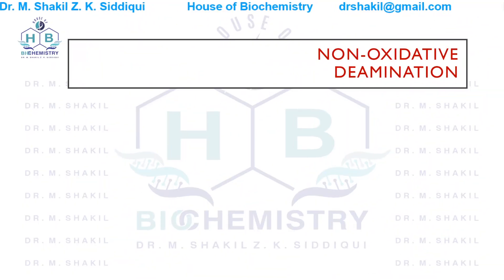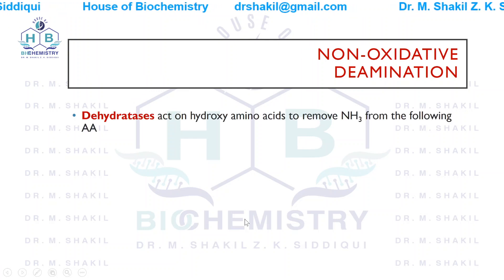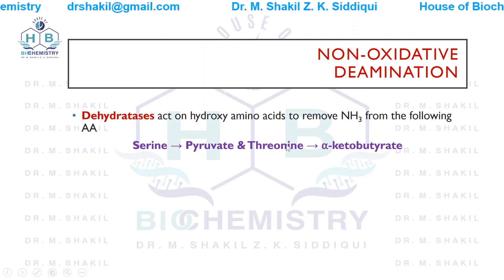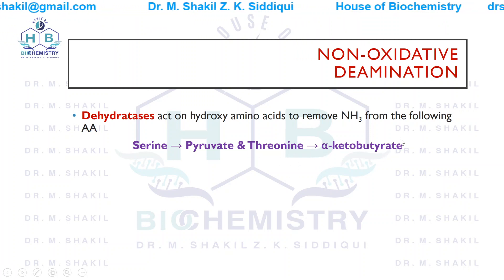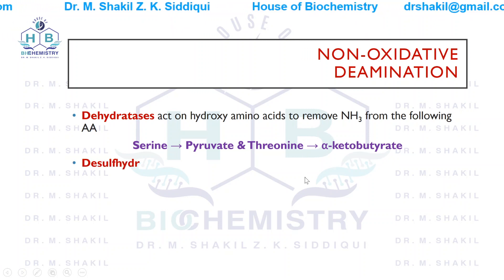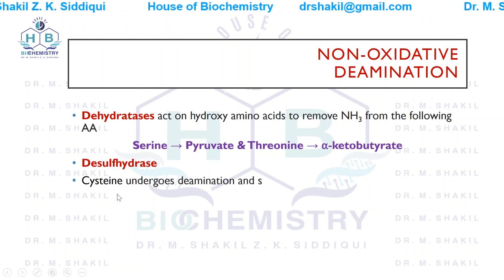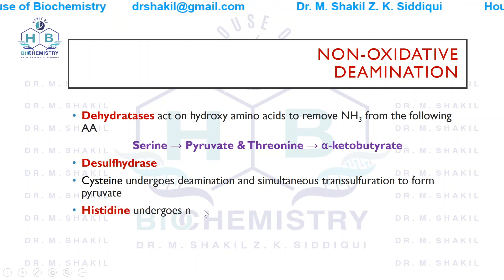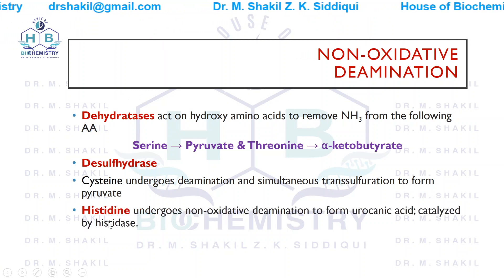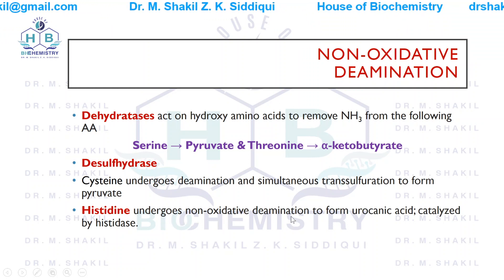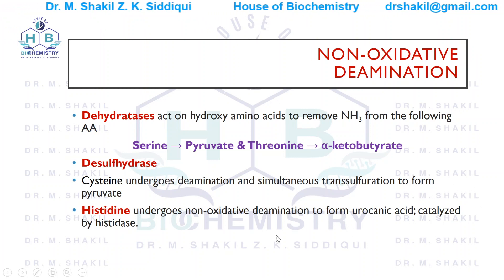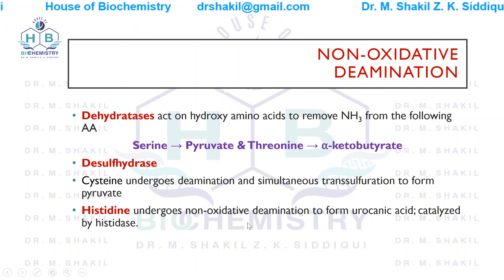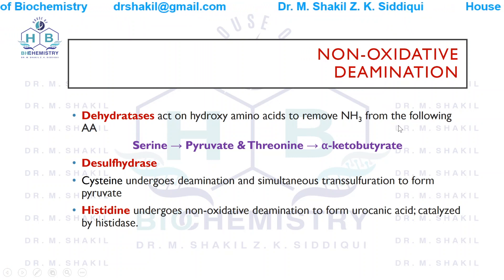Non-oxidative deamination: dehydratases act on hydroxy amino acids to remove ammonia. Serine is converted into pyruvate, and threonine is converted into alpha-ketobutyrate — we will study this in threonine catabolism. Desulfhydrase acts on cysteine, which undergoes deamination and simultaneous transsulfuration to form pyruvate. Histidine undergoes a non-oxidative deamination to form urocanic acid, catalyzed by histidase. In all these reactions, oxygen is not involved, so they are known as non-oxidative deamination reactions.